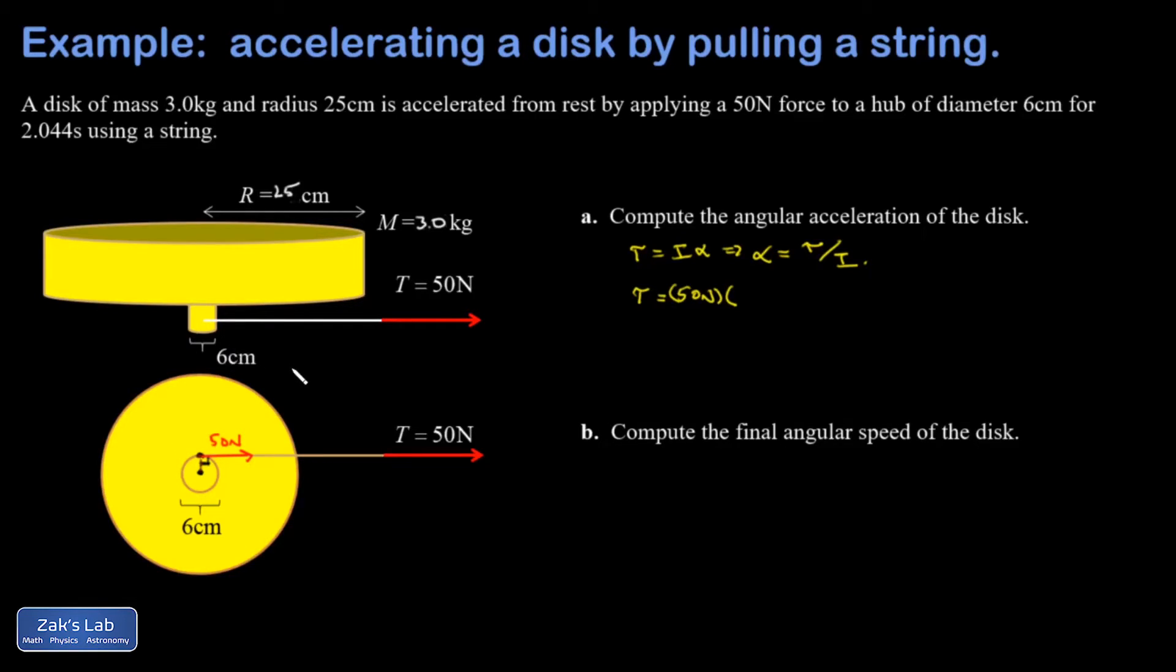So I was given the diameter of the hub, and I need to fix that by dividing by two. Three centimeters is the radius, or 0.03 meters. When I do the math, I get 1.5 Newton meters of torque.